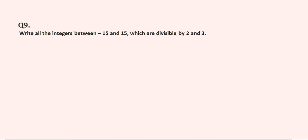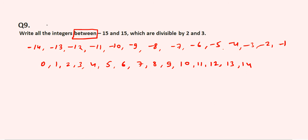Question number 9: write all the integers between minus 15 and 15 which are divisible by 2 and 3. The key word is 'between', meaning minus 15 and plus 15 themselves are not included — only the values in between, like minus 14, minus 13, minus 12, minus 11, and so on up to plus 14.